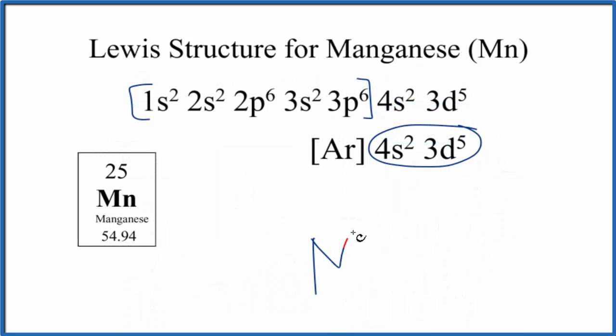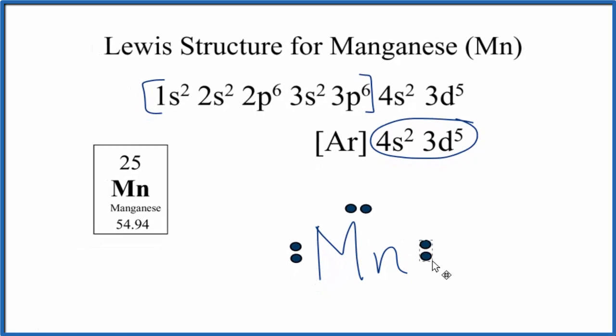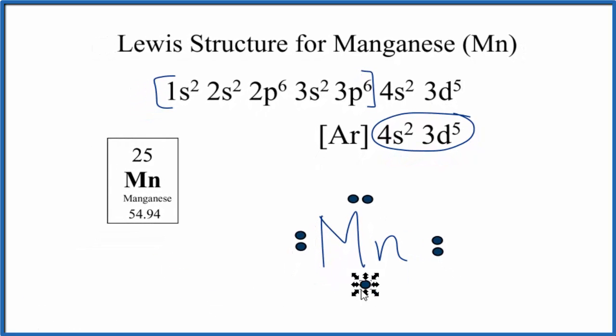So we write Mn, that's the element symbol, and then we have 7 valence electrons. So we put 2 here, and then 1 here, and this is the Lewis structure for manganese.